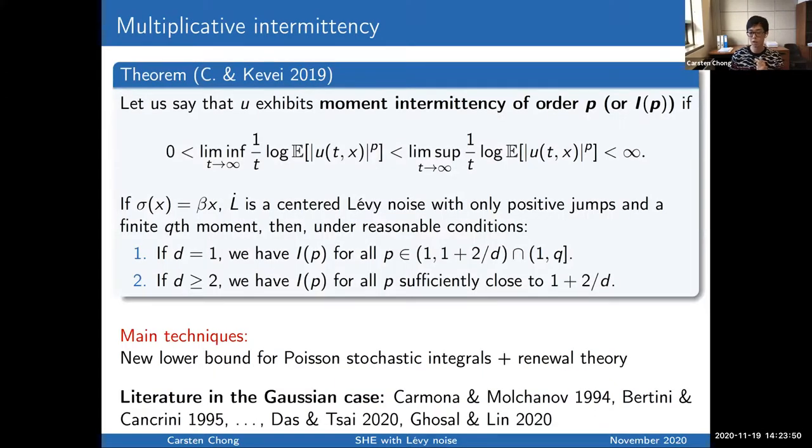In that case, I don't have pathwise results yet. So what I'm going to tell you about are asymptotics concerning the moment. So let's say that the solution U exhibits moment intermittency of order P. I just denote it by I(P) for simplicity. If these lower and upper moment Lyapunov exponents are strictly positive and finite respectively.